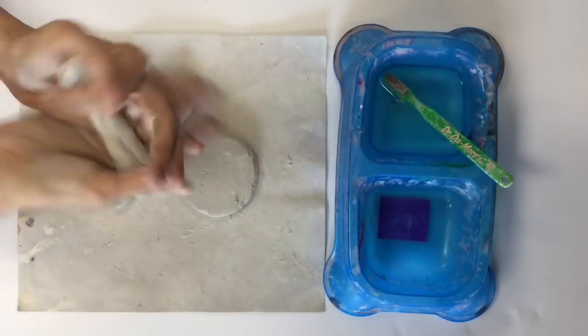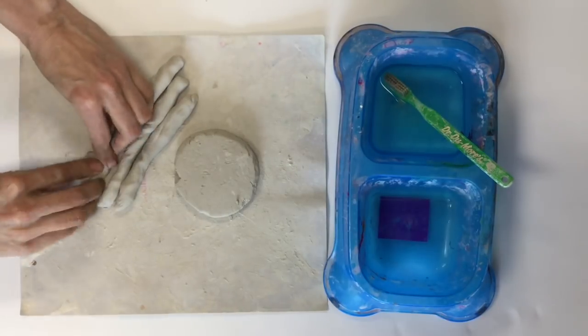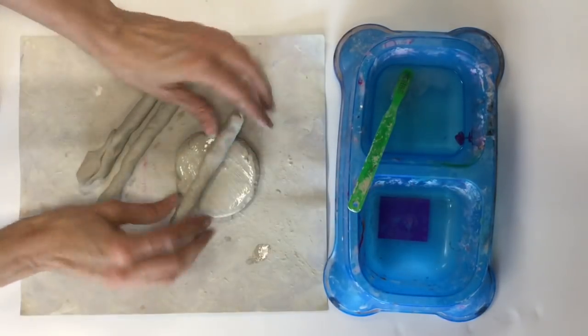The great thing about this project is it emphasizes using the three main components of clay, which is a slab for the turtle shell, a sphere which we'll use for the eyes, and coils.